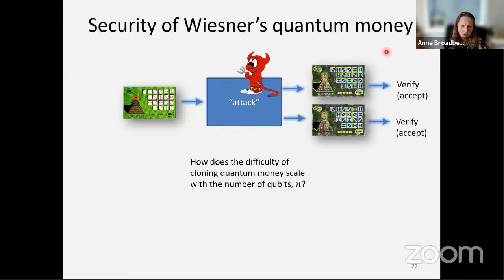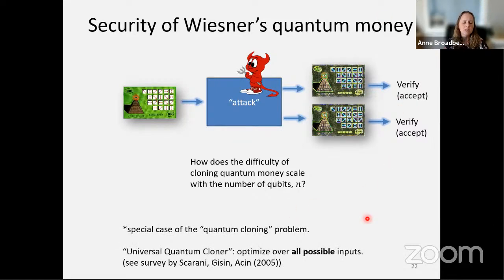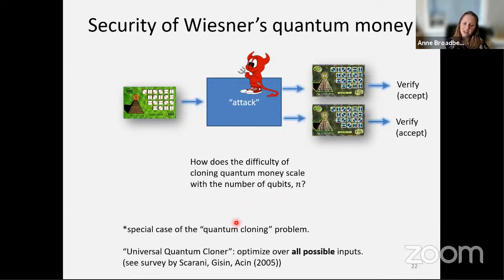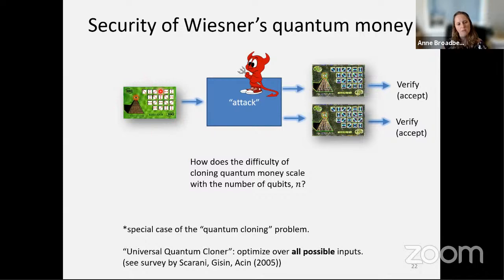I want to relate this to quantum cloning. When I was a grad student, I saw the no-cloning theorem and then heard everybody talking about quantum cloning — I didn't get it. These are actually approximate or optimal cloners: how close can you get to cloning without actually cloning, which is impossible? This is a type of cloning question — how well could you clone given that the quantum state comes from a certain distribution? There are results on universal quantum cloners optimized for any possible input state.